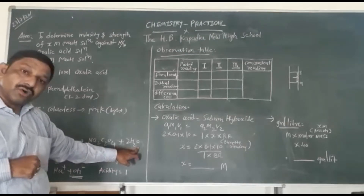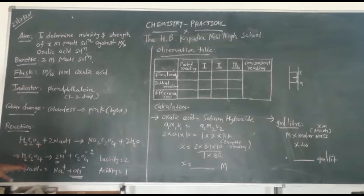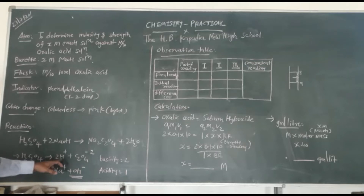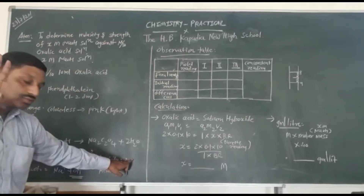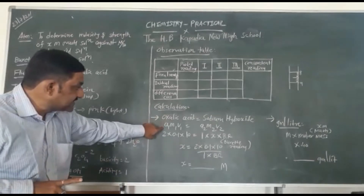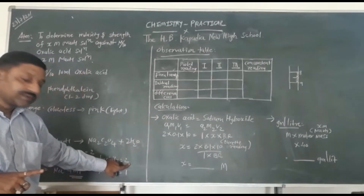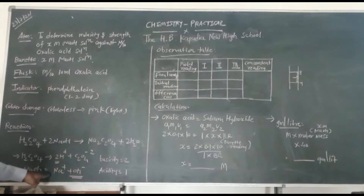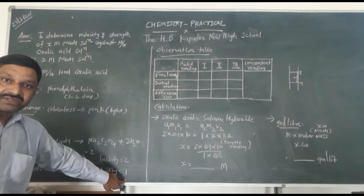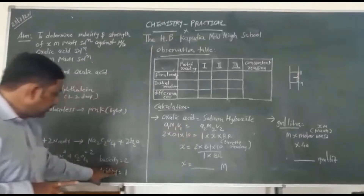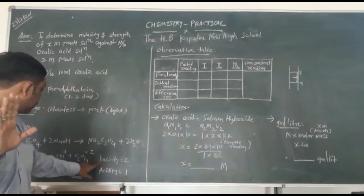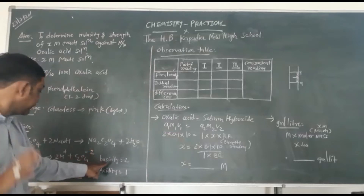The reaction is: oxalic acid H2C2O4 plus 2 NaOH gives Na2C2O4 (sodium oxalate) plus 2 H2O. In oxalic acid H2C2O4, after reaction it gives 2 H⁺ plus C2O4²⁻, so the basicity (A1) of oxalic acid is 2. For NaOH, it gives Na⁺ plus OH⁻, so the acidity (A2) of NaOH is 1. Therefore A1 is 2 for oxalic acid and A2 is 1.